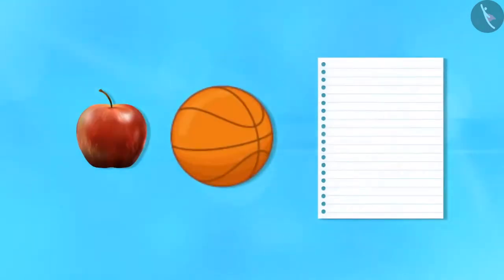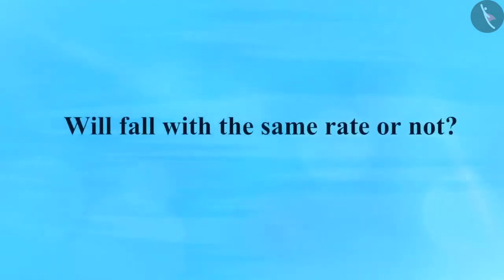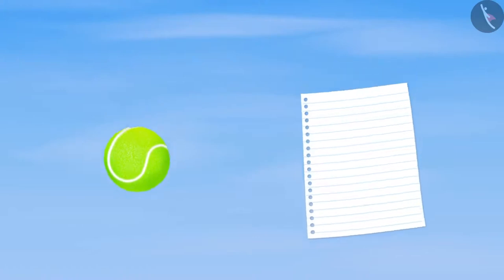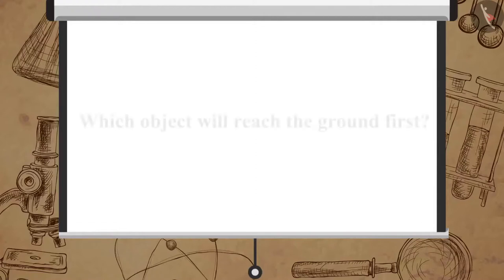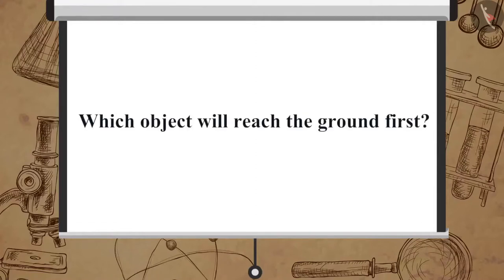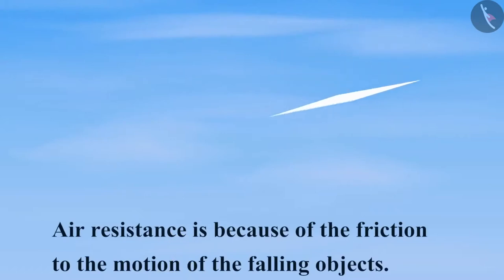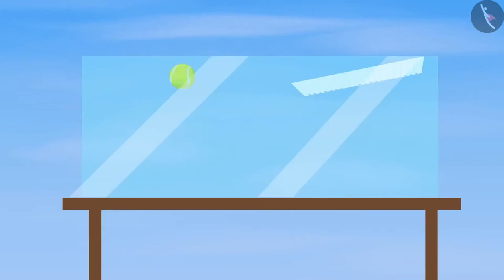Let us perform one more activity to understand whether all objects — hollow or solid, small or big — when allowed to fall from the same height, will fall at the same rate. Take a sheet of paper and a small ball. Drop both at the same time from the first floor of a building. We notice that the ball reaches the ground first and then the paper. This happens due to air resistance, which is caused by friction on the motion of falling objects. The air resistance offered to the paper is more than to the ball. However, if we perform this activity in a glass box from which all the air has been sucked out, the paper and the ball will fall at the same rate.